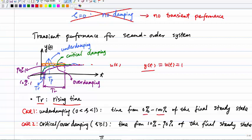For critical or overdamping, the rise time is defined as the time from 10% to 90% of the final steady state. So tr is the time the system takes to move from 10% of the final steady state to 90% of the final steady state. That's defined as the rise time for critical damping or overdamping.